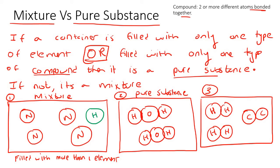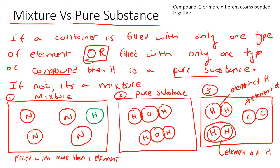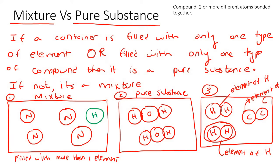In container number three, we have an element of hydrogen and an element of carbon. They are not compounds because a compound requires two or more different atoms bonded together. Looking at the definition, the container is not filled with only one type of element — we have hydrogen and carbon — so this is not a pure substance. This one is going to be a mixture.